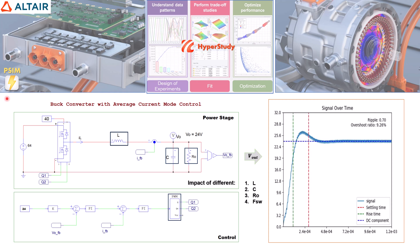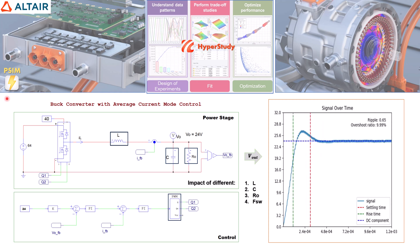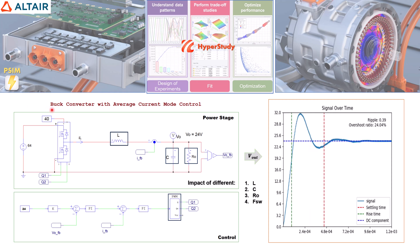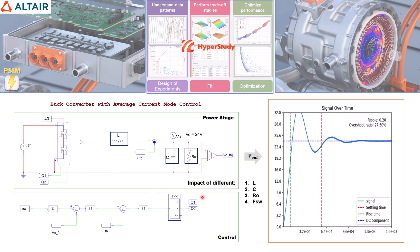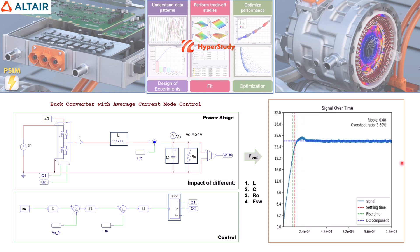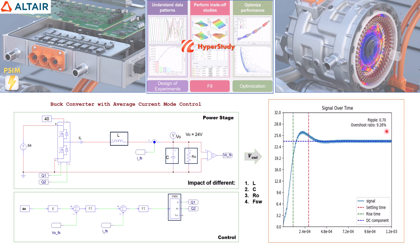Just take the example you see in your screens as food for thought. It's the simplest of examples, just a synchronous buck converter, but even this topology has some KPIs. It can be the output voltage ripple, the overshoot, or the converter losses.